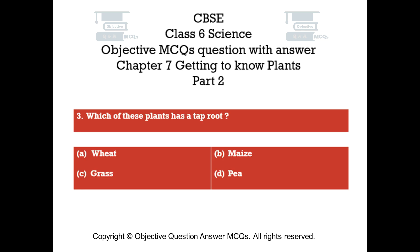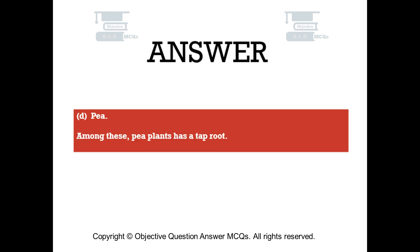Question number three. Which of these plants has a taproot? Option A wheat. Option B maize. Option C grass. Option D pea. The right answer is option D — pea. Among these, pea plant has a taproot.